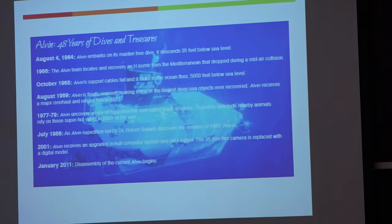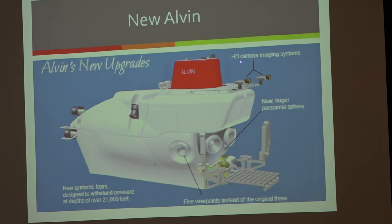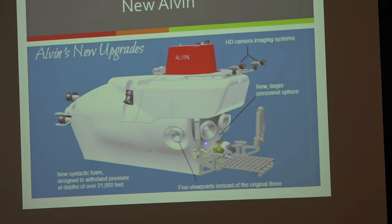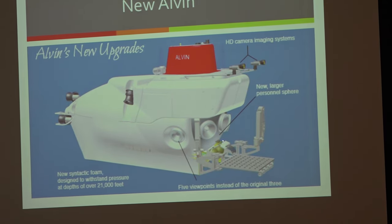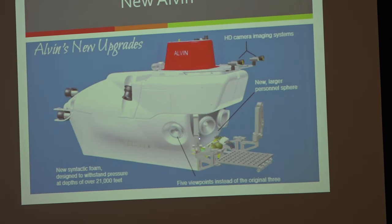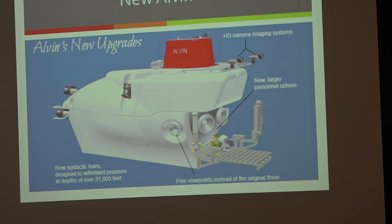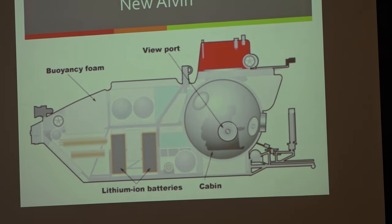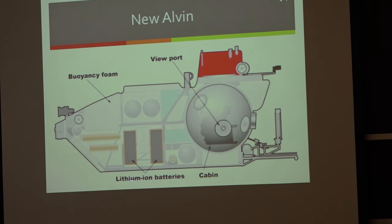The upgrades included HD camera, larger personnel sphere so three people could crawl around, five viewing ports. The viewing ports were more in line - before in the old Alvin the pilot had a different view than the other people. New syntactic foam designed to withstand pressure depths of 21,000 feet. We can go a little deeper, still can't go into the Marianas Trench, but this would cover 99 plus percent of the ocean.